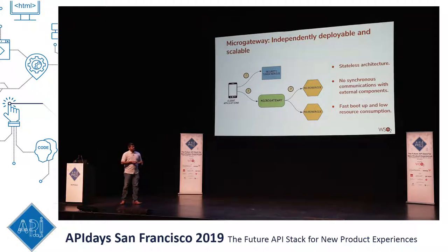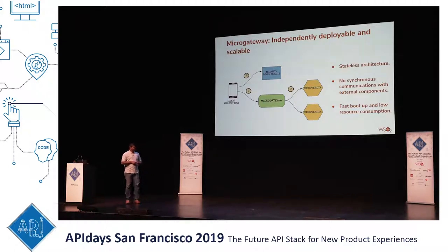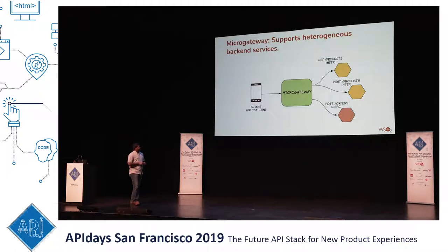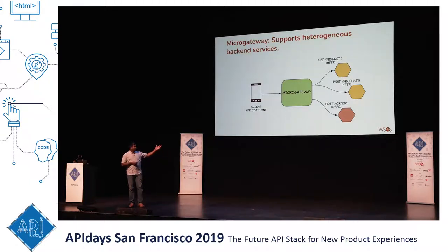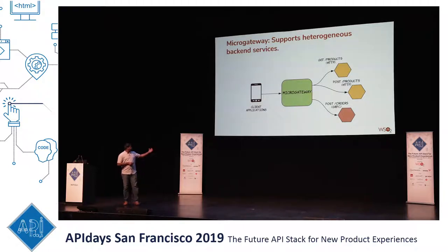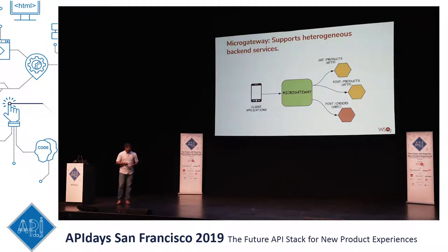With the micro-gateway approach, there won't be any synchronous communication with external components such as token services. At the same time, there will be a fast bootstrap because you don't need to package everything together, which allows low resource consumption. In the modern world, we do not have only HTTP but also services like gRPC. So the micro-gateway should be able to provide access to these different protocols — HTTP and gRPC. When the client is accessing those services, the micro-gateway provides access to HTTP and gRPC through a single runtime.